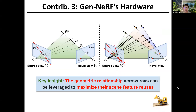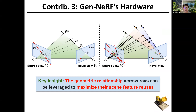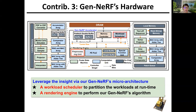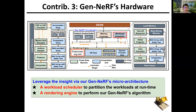On the hardware side, our key insight is that the geometric relationship across different camera rays can be leveraged to maximize their feature reuses. In light of this, we develop our GenNerf microarchitecture, which features a workload scheduler to analyze the geometric relationship across camera rays and partition the workloads correspondingly at runtime, as well as a rendering engine to perform our GenNerf algorithm.